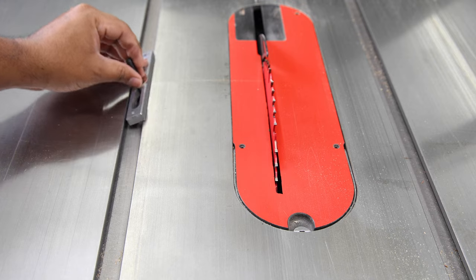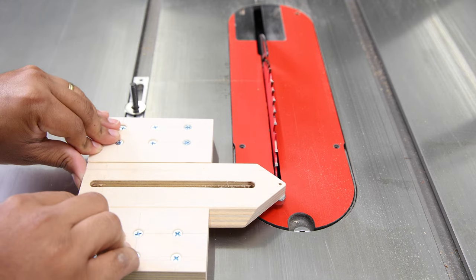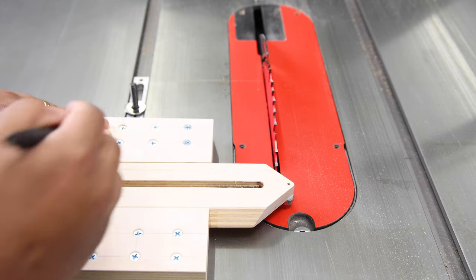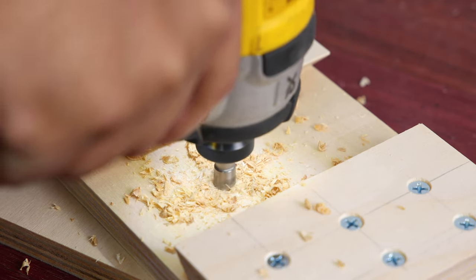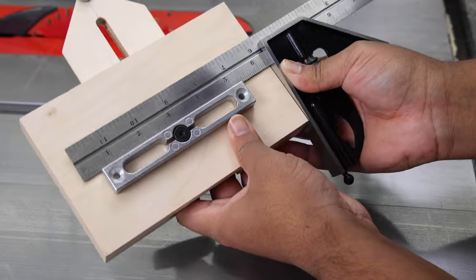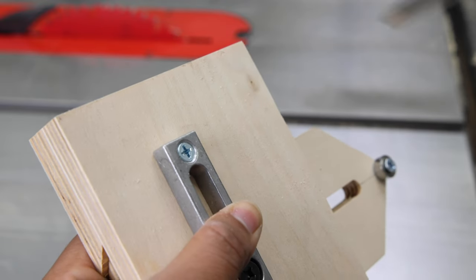Then we're going to place it on the table saw to get a feel for the travel of the centerpiece. We're going to get it past the saw blade and then mark a spot to drill a hole through for the locking bolt piece. Feed the bolt through, square up the miter bar, and screw that down to the base.